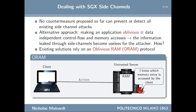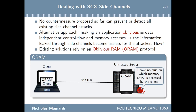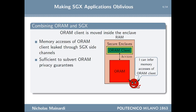An alternative approach has been to make SGX applications oblivious, meaning they should exhibit data-independent control flow and memory access. In this way, information leaked through side channels becomes meaningless for the attacker. All existing solutions following this approach rely on an oblivious RAM protocol. An oblivious RAM allows a client with limited storage to access data stored on an untrusted server while ensuring the server cannot determine which memory entry is actually retrieved. When combining ORAM and SGX, the ORAM client can be moved inside the enclave, but doing so leaks the ORAM client's memory accesses through SGX side channels, which is sufficient to subvert ORAM privacy guarantees.